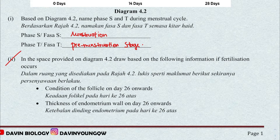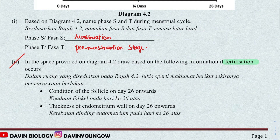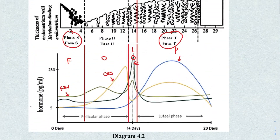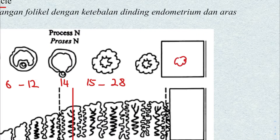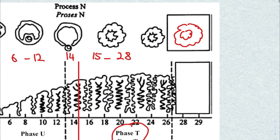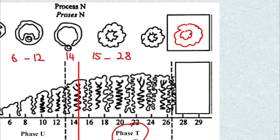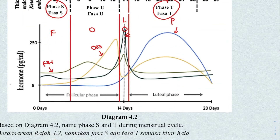The next question says: in the space provided, draw what happens if fertilization occurs — specifically the condition of the follicle on day 26 onwards, and the thickness of the endometrium wall on day 26 onwards. If fertilization occurs, the corpus luteum remains because you're going to need progesterone to further develop the endometrium. So you just draw exactly the same thing and it will continue to thicken the endometrium wall — you just draw straight lines.